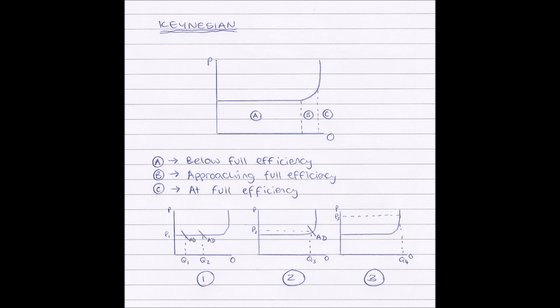I've divided it up into three sections here. Now in section A, our curve is horizontal. In section B, our curve is beginning to slope upwards. And in section C, our curve is vertical, straight up.